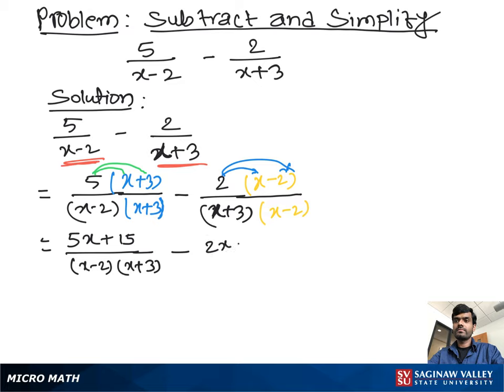Now, as you see, both terms have the same denominator, so our lowest common denominator, LCD, is x minus 2 times x plus 3.